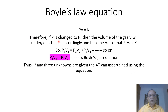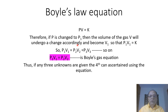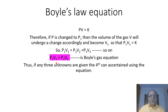From the previous slide, Boyle's law gives us PV = K. Therefore, if P is changed to P1, the volume V will change to V1. If P increases to P1, V will decrease to V1, so that P1V1 = K. Therefore we can write P1V1 = P2V2 = P3V3 and so on.